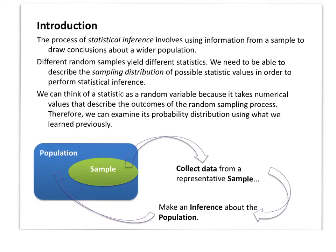The fourth and final topic we need to cover for the AP exam is statistical inference — activities we've been doing in class where we collect data from our samples and use that data to predict what the larger population might look like. For example, when you drew chips out of the bag and counted the white chips, we used that data to predict how many white chips were in the whole bag, even though you never saw more than 20 chips at one time. You were still able to predict exactly how many white chips were in the whole population of 500 chips. This is inference: taking data and making predictions about the whole population.